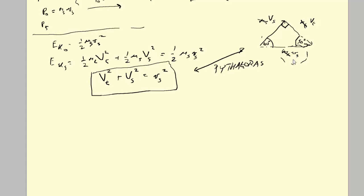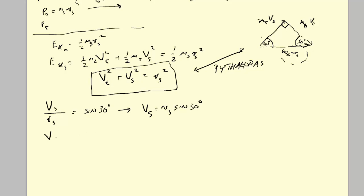From the right-angle triangle, the post-collision velocity of the shooter divided by the initial velocity of the shooter equals sine of 30 degrees. Similarly, the post-collision velocity of the target divided by the initial velocity of the shooter equals cosine of 30 degrees. So: v_shooter_after = v_initial × sin(30°), and v_target_after = v_initial × cos(30°) ≈ 0.866 × v_initial.